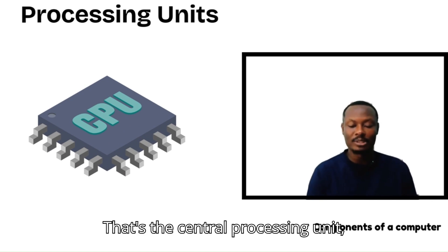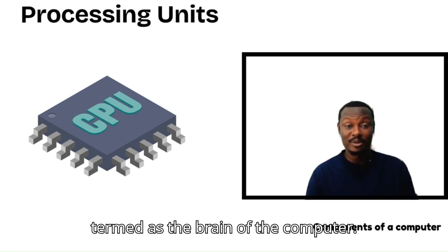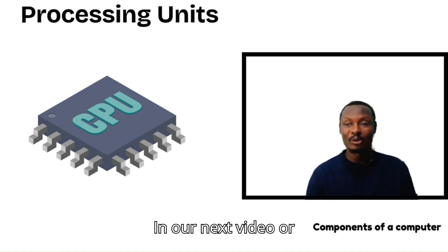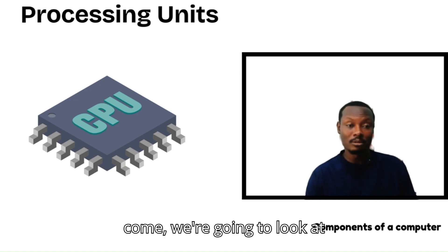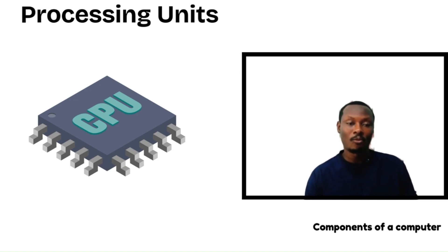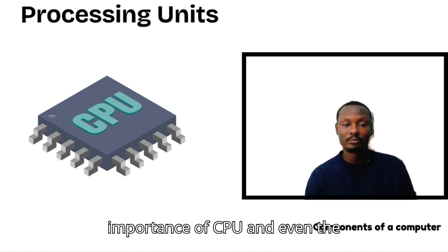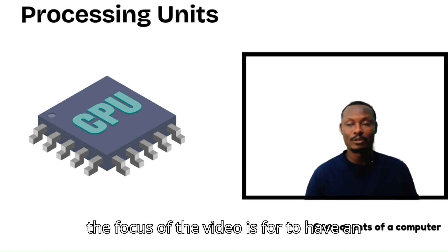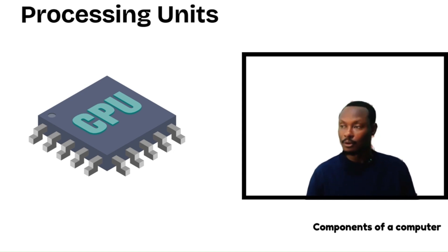The processing unit is the Central Processing Unit, or CPU. The CPU can also be termed the brain of the computer. In upcoming videos we will look at why we learn about the CPU, its importance, and the types of CPUs. For now, the focus is for you to have an idea of the key components of a computer.